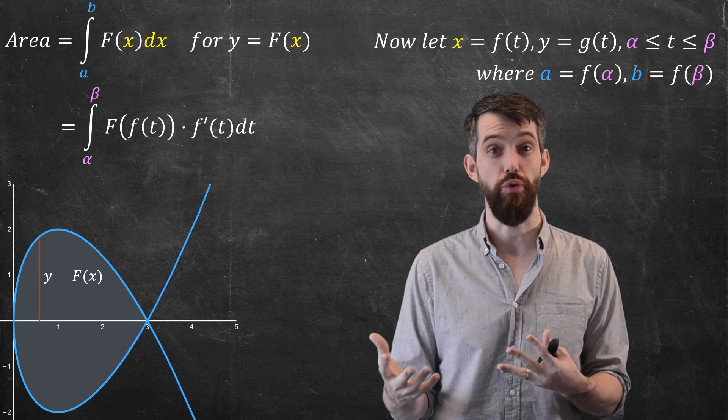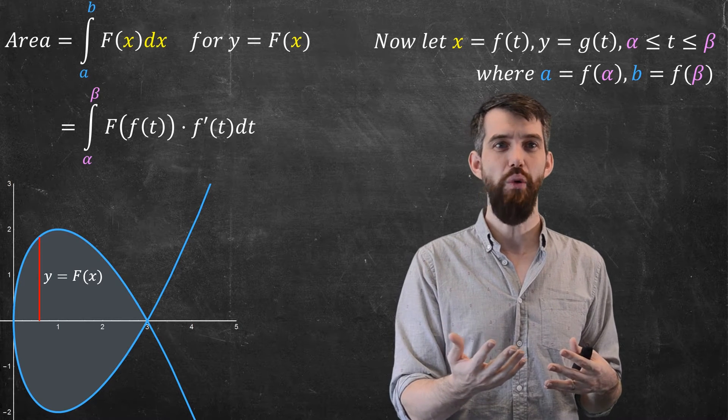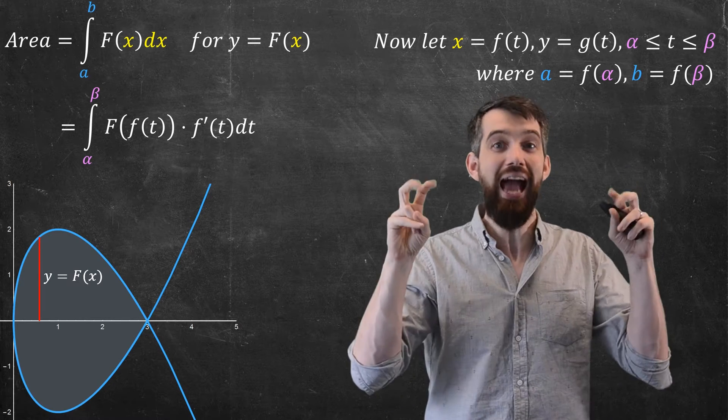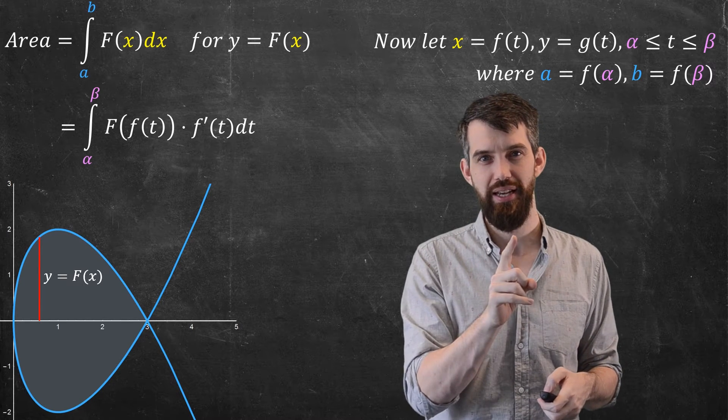Well, this is a substitution rule. Recall how typically substitutions we do a u substitution, but because I'm going between x and t's, I'm going to do an x substitution here. That is, if I look at what f of t is, f of t, the lowercase f of t, is nothing but x.